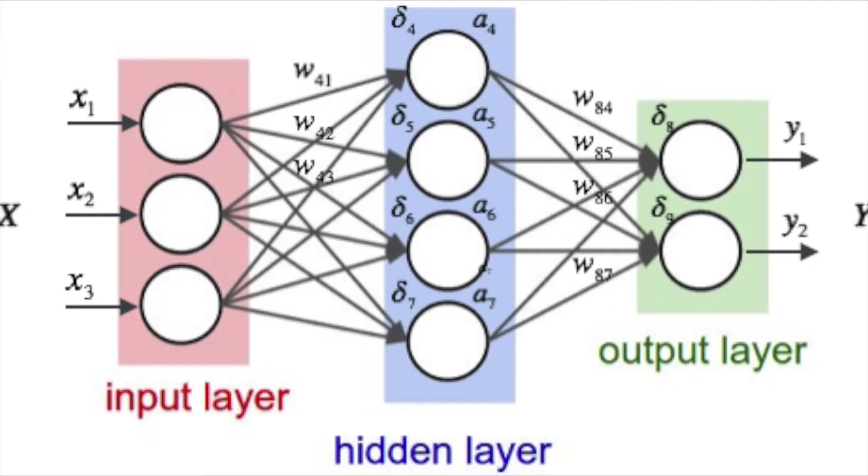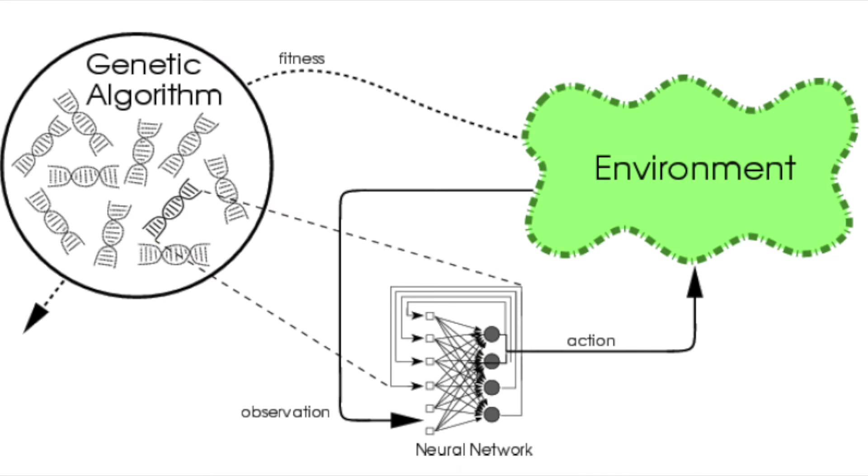Why do we use the weights and biases of a neural network as the features of our individuals? Well, neural networks are really just functions that take a set number of numbers as inputs and output a set number of values based on its parameters. In AI, the weights and biases of the network are called parameters.